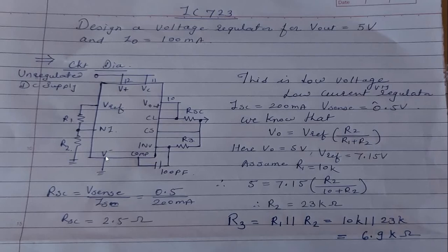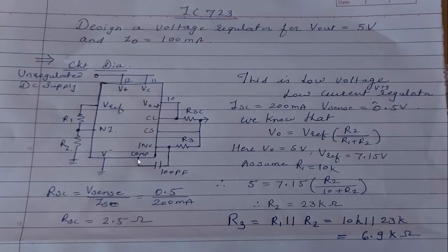By the voltage divider law: Vout = Vref × R2 / (R1 + R2). V-minus is connected to ground. Vout appears at pin number 10. For current limiting, one external resistor RSC is added, which senses and limits the current. The output is also connected through R3 to the inverting input of the error amplifier.